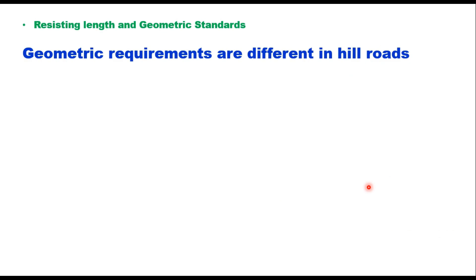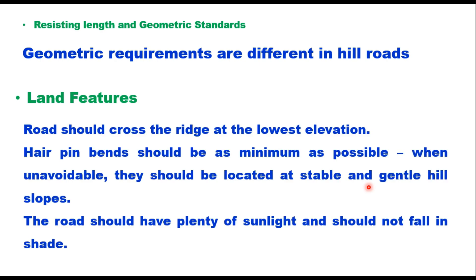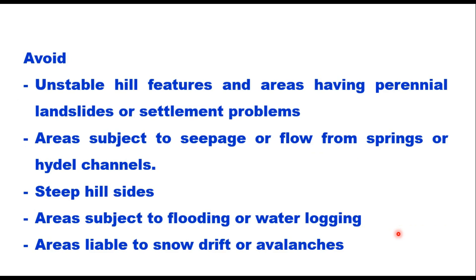Geometric design standards for hill roads are different and must be met. Physical features of the area are more important in hills than in plains. Roads should cross ridges at the lowest elevation. Hairpin bends should be minimized and, when unavoidable, located at stable and gentle hill slopes. The road should have plenty of sunlight and should not fall in shade. Features to avoid include unstable hill features, areas with perennial landslides or settlement problems, areas subject to seepage or flow from springs, steep hillsides, areas subjected to flooding or waterlogging, and areas liable to snow drift or avalanches.